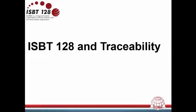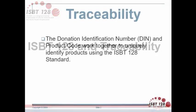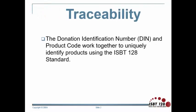During this presentation, I will be discussing how the use of the ISBT-128 Donation Identification Number and the ISBT-128 Product Code facilitate traceability. ISBT-128 supports traceability through the combined use of the globally unique Donation Identification Number and a product code. This allows facilities to trace products globally from the donor to the recipient.